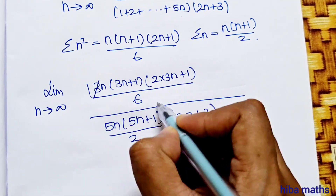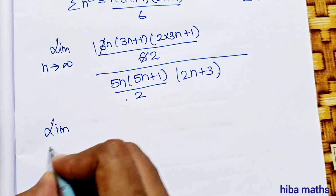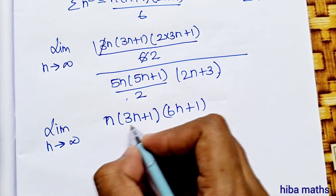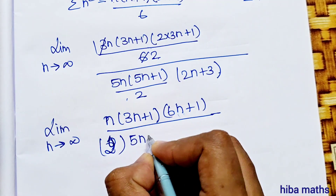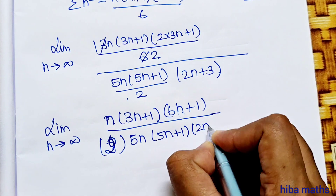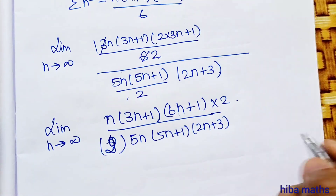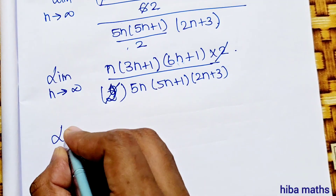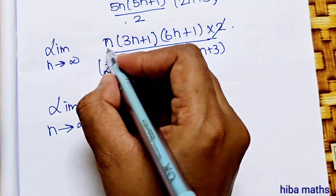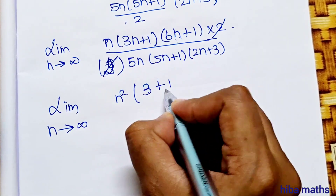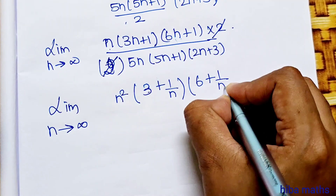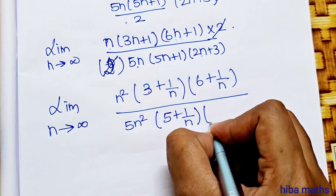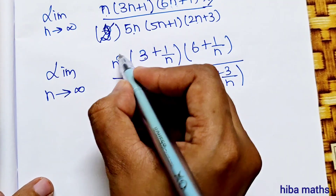Simplifying by cancelling common factors: the expression becomes limit as n turns to infinity of n squared times (3 plus 1 by n) times (6 plus 1 by n), divided by 5 times n squared times (5 plus 1 by n) times (2 plus 3 by n). The n squared terms cancel.